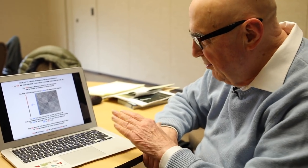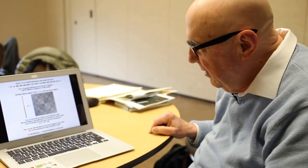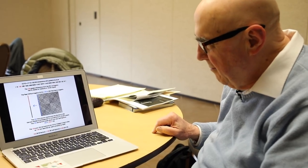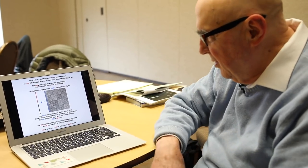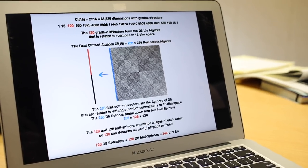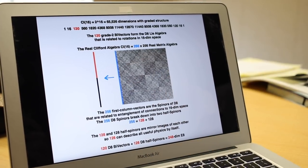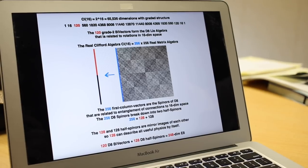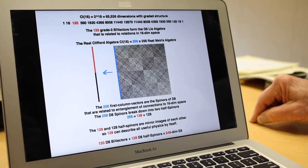The spinors, if you don't want to look at the whole 256 by 256 thing, you can just look at the first column. The first column, the blue thing there, are the spinors. That's the 256-dimensional spinor space of D8. This part of the matrix and that part of the matrix are sort of mirror symmetric.